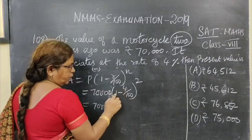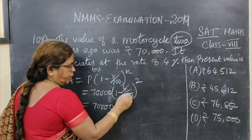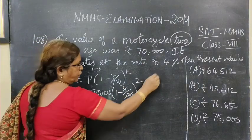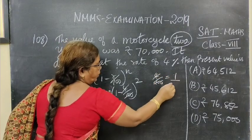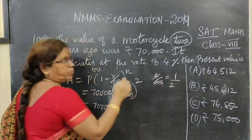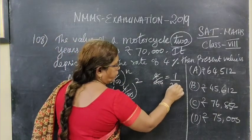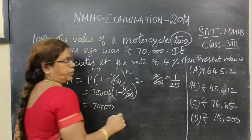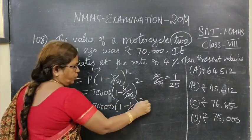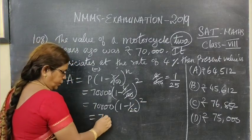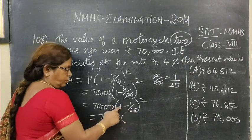This is 100 minus 4. Cross multiply 100 minus 4. Now let's cancel here. Cancel here. 4 by 100. So if you cancel — one time, 2 times — then balance is 20. Therefore 5 times. 1 by 25. So we get 1 by 25 whole square. Equal to 70,000, cross multiply.